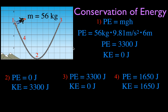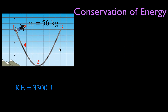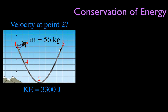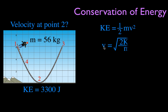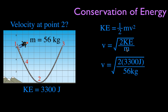Another common task is to figure out the velocity at point 2 — how fast the skater is going at the bottom. We can use the kinetic energy equation since we know KE equals 3,300 joules. Rearranging the kinetic energy equation for velocity gives: v equals the square root of 2 times KE divided by m. That's the square root of 2 times 3,300 divided by 56, which gives 10.9 meters per second.